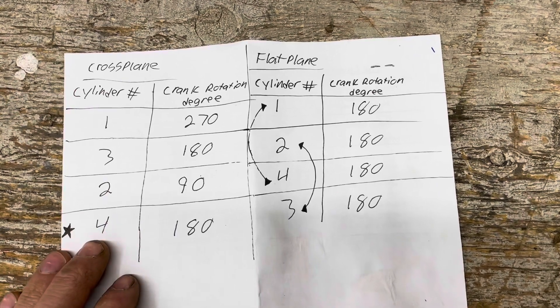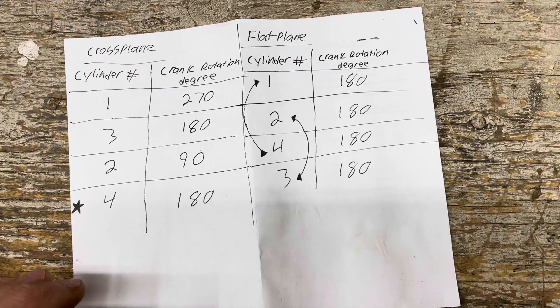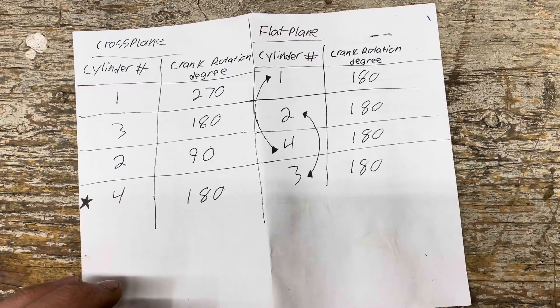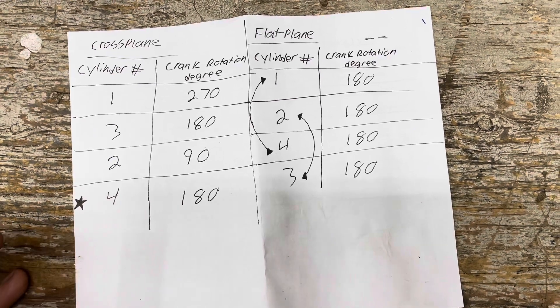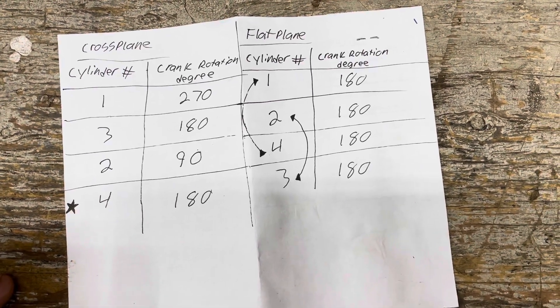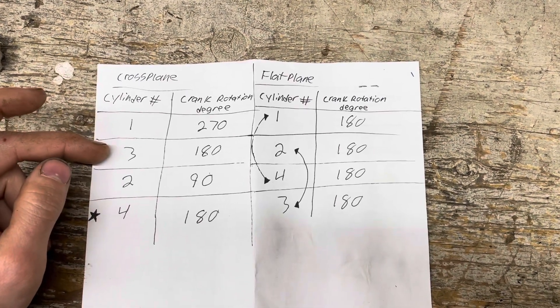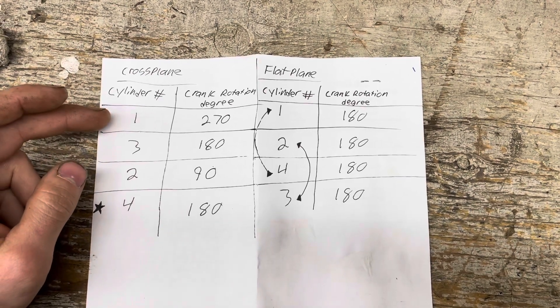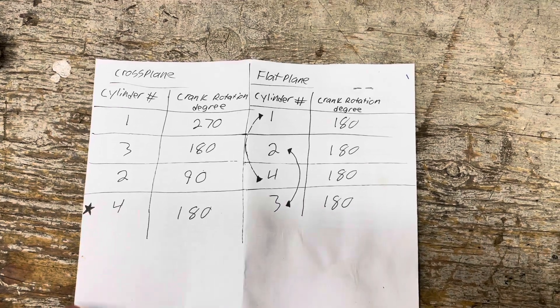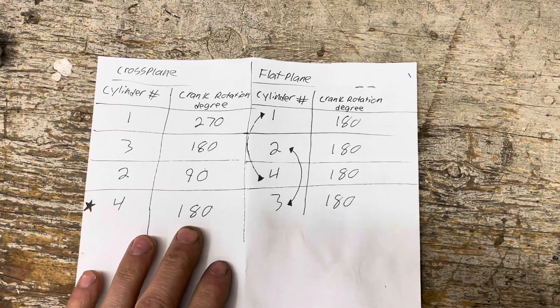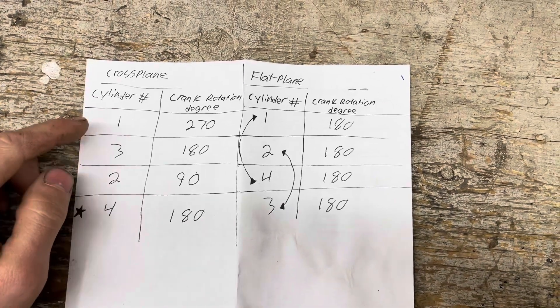The more RPM you give the cross plane the smoother it is. You could almost compare it to a cammed V8 when they're really choppy and lopey down low. They don't like to idle super smooth but the more RPM you give a cammed V8 the smoother it gets and the more power it makes. This is also part of the reason why the cross plane gets horrible fuel mileage. It's just not as efficient as the traditional flat plane crank. This very unique firing order is also why the cross plane weighs more because it takes more counterweight to balance this style of crank.